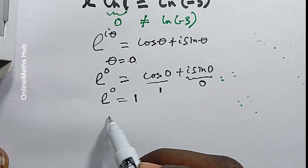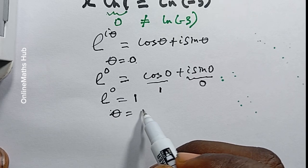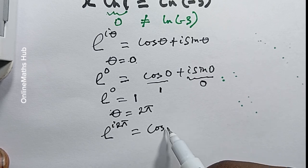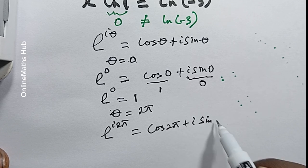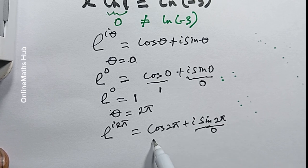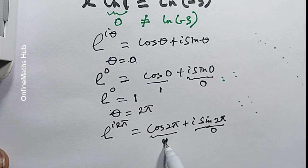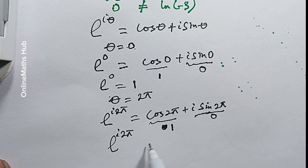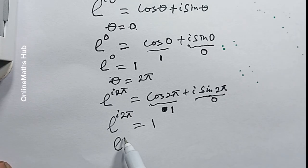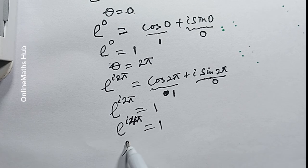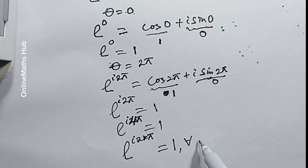This doesn't only happen for θ = 0. When you substitute θ = 2π, e^(i·2π) also gives cos 2π + i sin 2π, and since sin 2π = 0 and cos 2π = 1, this still equals one. Similarly for θ = 4π. In general, e^(i·2kπ) equals 1 for all integer values of k.